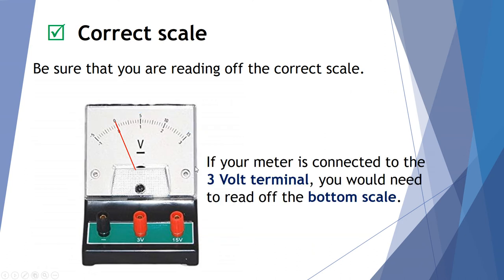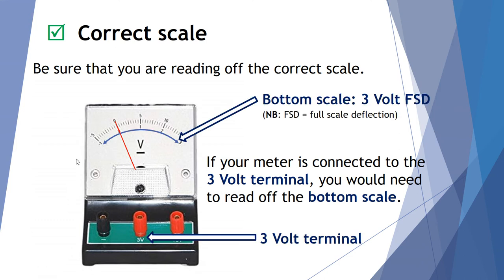If however we had our circuit connected to the 3 volt scale, that means we'd have to read off the bottom scale. Because the bottom has a full scale deflection of 3 volts on the bottom scale. So depending on which terminal we use, we have to choose the top or the bottom scale. Remember, of course, the full scale deflection will match the correct terminal.